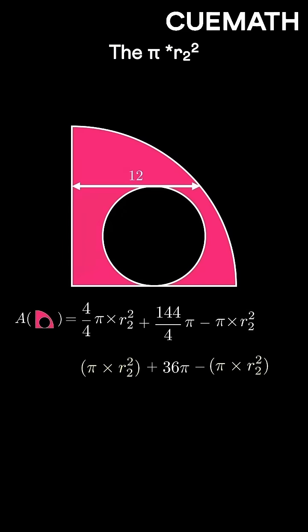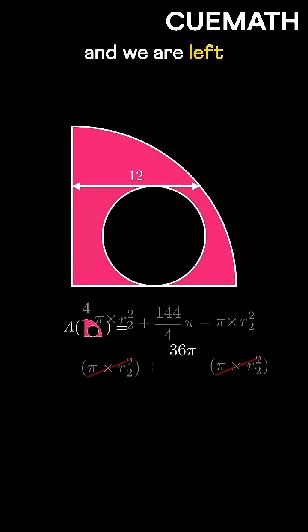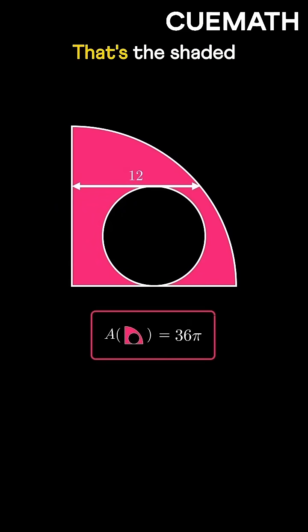The pi times R2 squared terms cancel out and we are left with 36 pi. That's the shaded area.